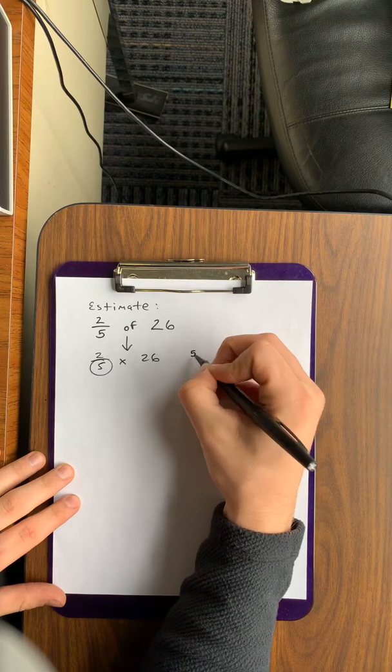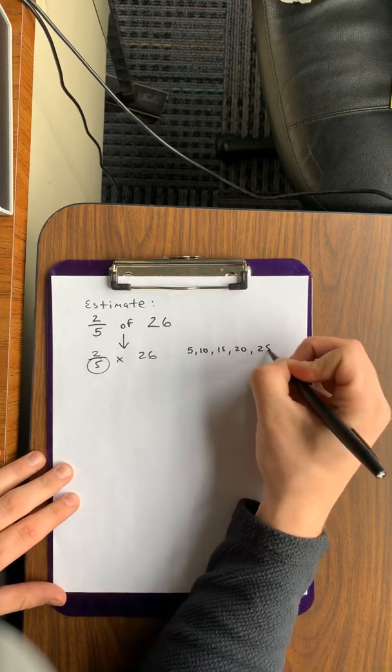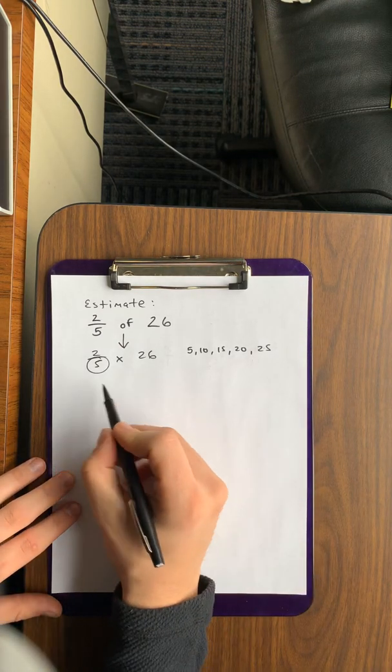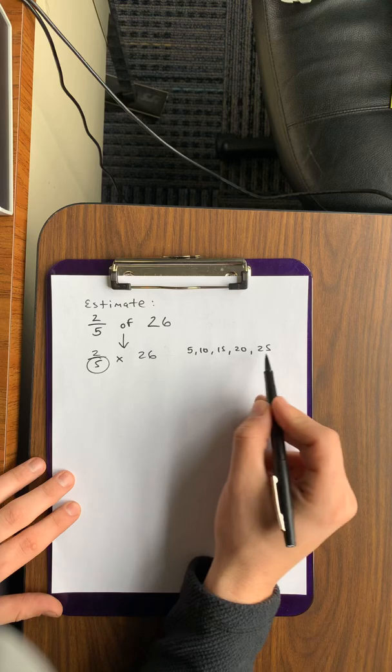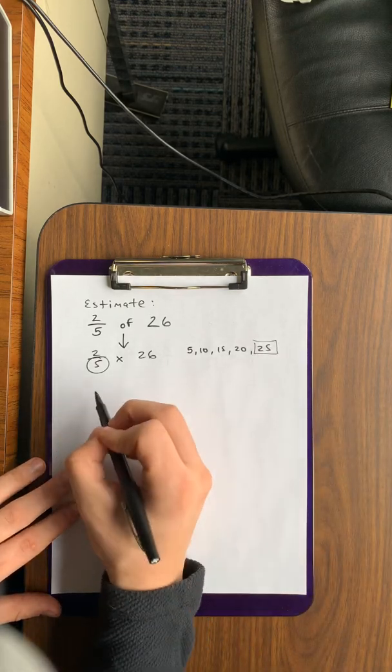Denominator's five, so we skip count: five, ten, fifteen, twenty, twenty-five should be good for us. We just have to ask ourselves which one of these numbers is closest to 26. Hopefully you realize that it's 25.